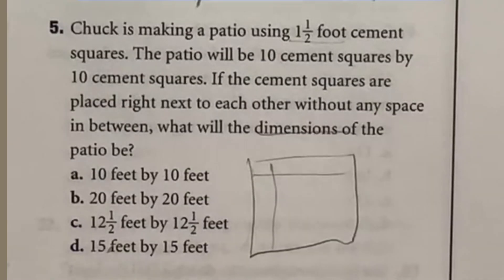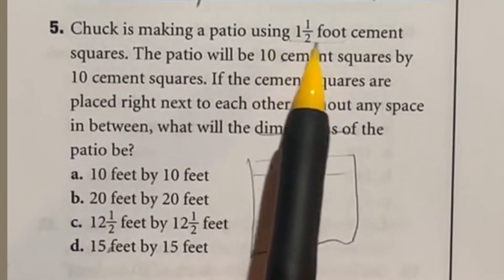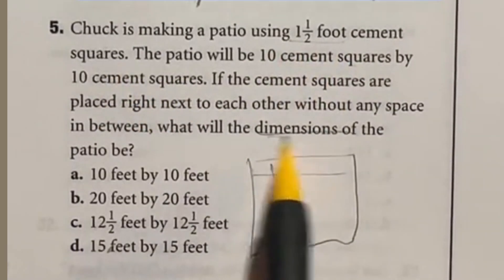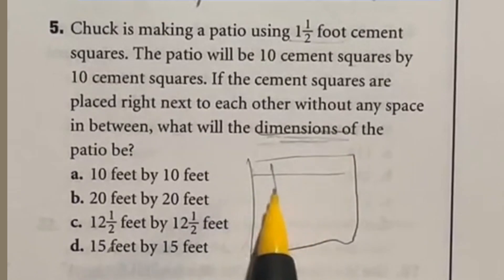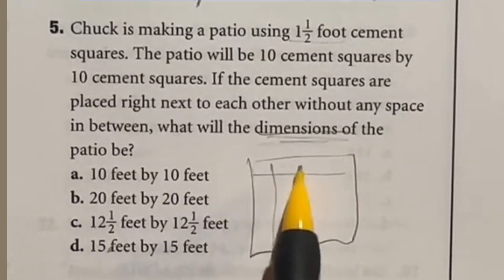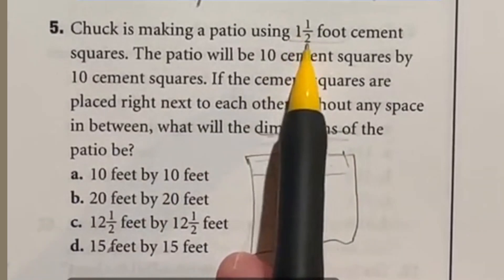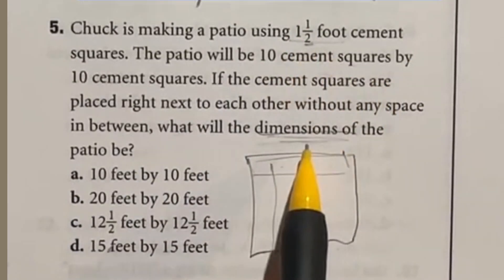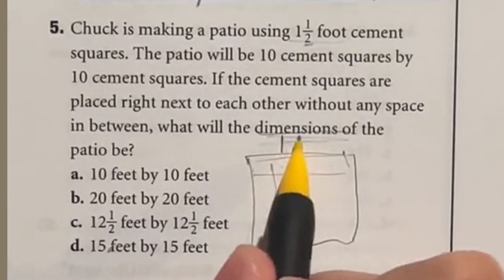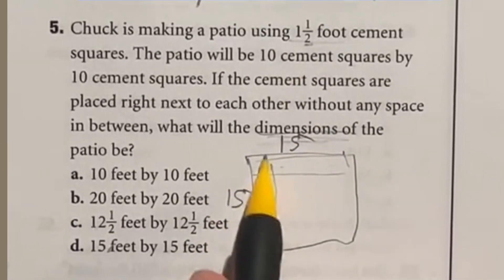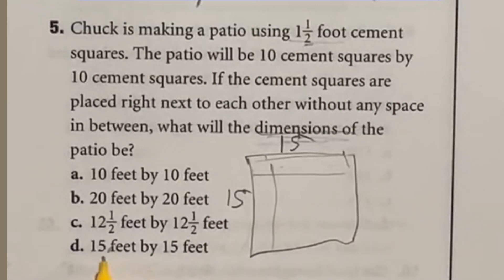So Chuck here is making a patio using a foot and a half cement squares. He's using 10 of them across and 10 down and they want to know the final dimensions in feet. Well, if it is a foot and a half and we have 10 of them, well, we have the 10 for the one foot each. And then we have half of that for this half we're adding on. So half of 10 is five. So that means we have 15 feet going across here, 10 plus the five, and another 15 going down here with the other 10. That means our dimension should be 15 by 15, which is D.